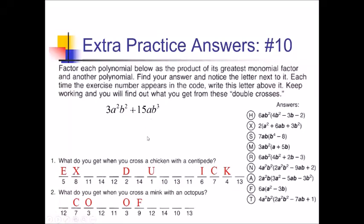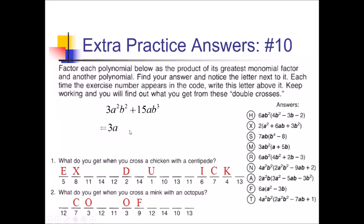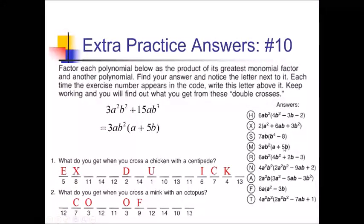Problem 10 also has just two terms. For 3 and 15, I take a 3 out. For A's, I have A to the first — and for B's, my lowest power is B squared, so I can take B squared out as well. GCF is 3AB squared. Dividing: 3A²B² gives A; 15AB³ divided by 3AB² gives 5B. Inside we have A plus 5B — that's choice M. Spot 10 gets an M, and there's another 10 at the very end, so we use that M twice.